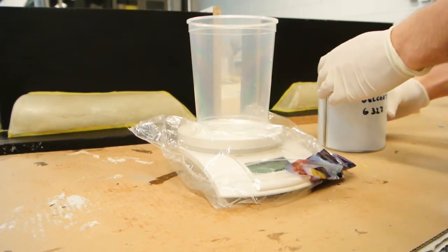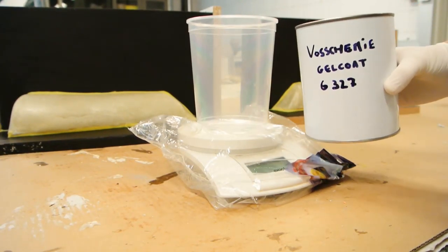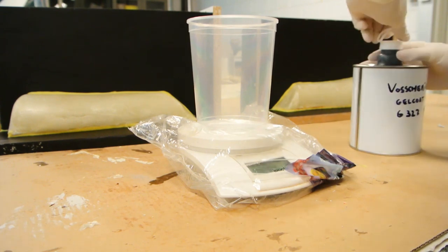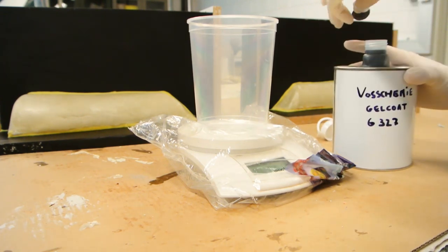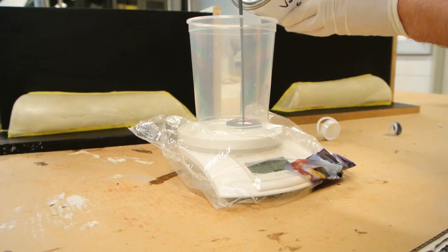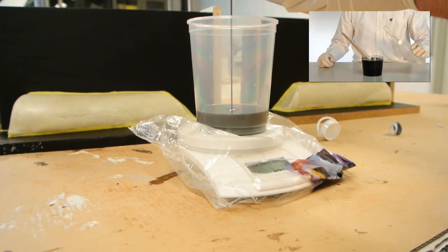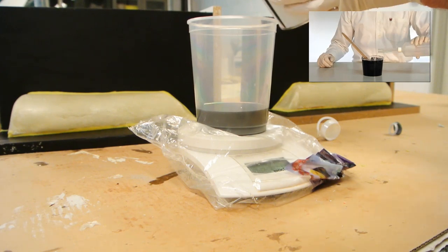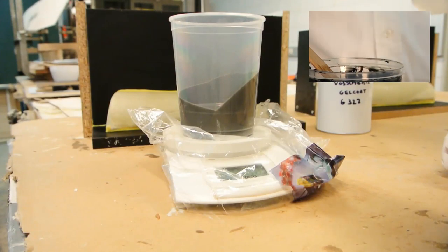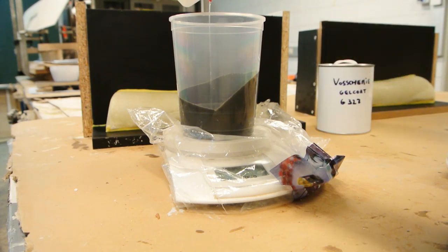Now for the vinyl ester gel coat. It's quite easy to do, like brushing on paint. The mixture is the same as polyester resin. For example, if you make 200 grams of vinyl ester, add 3 grams of MEKP hardener. If you make 200, add 6 grams of MEKP hardener.